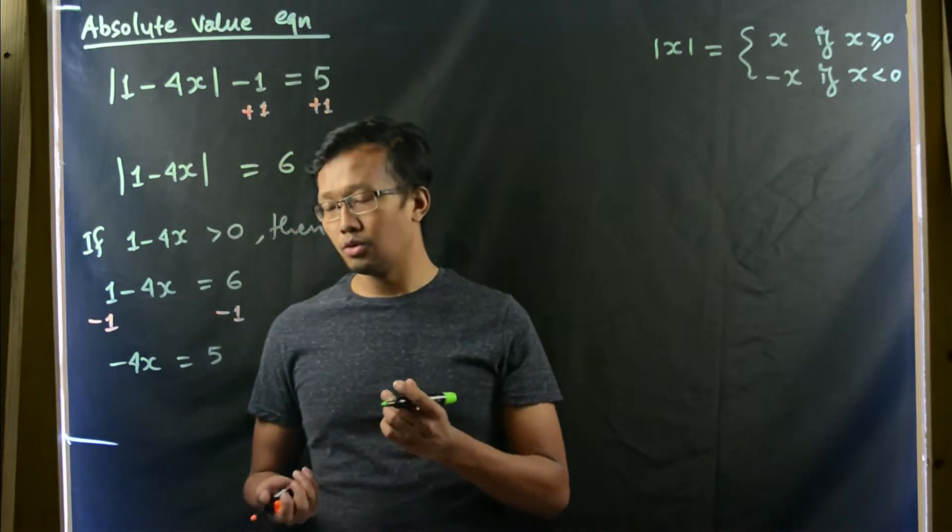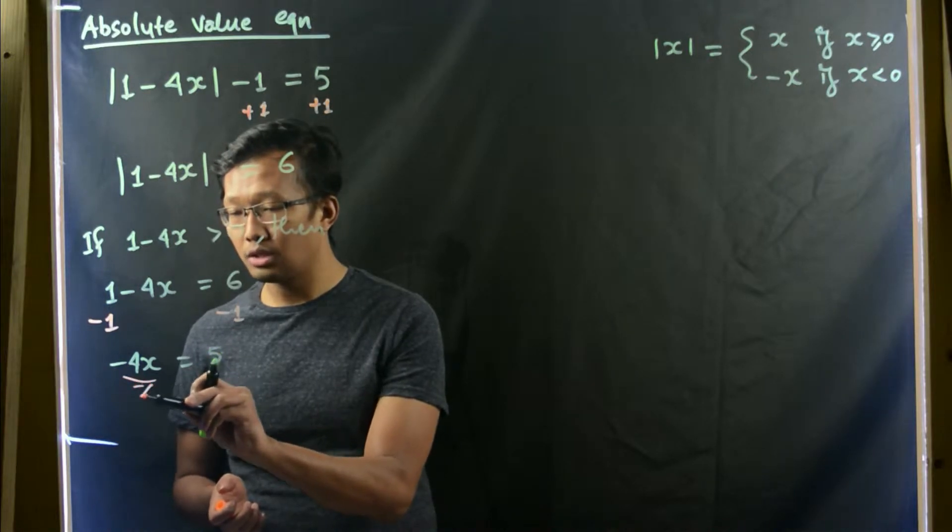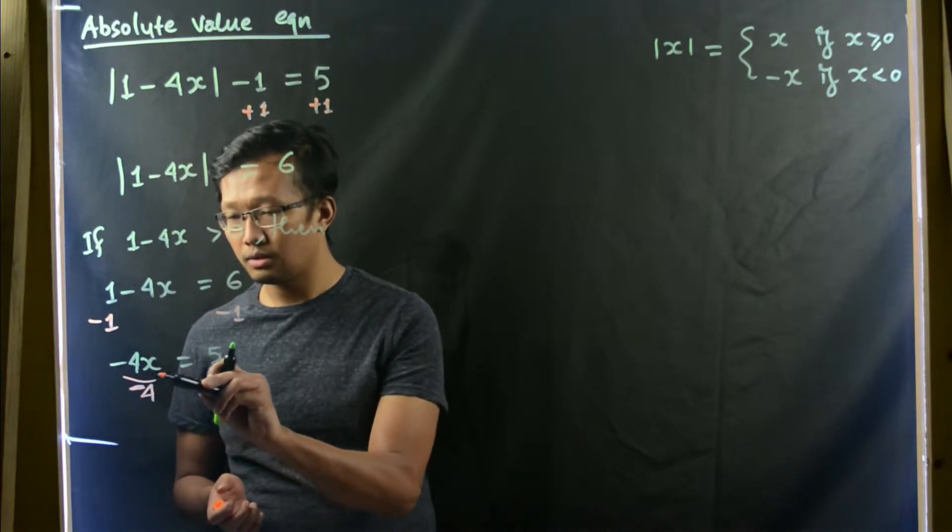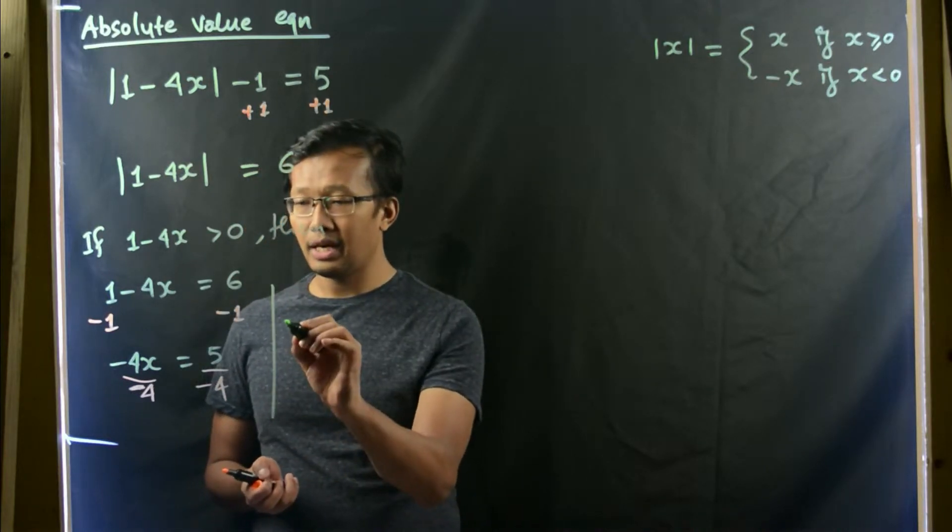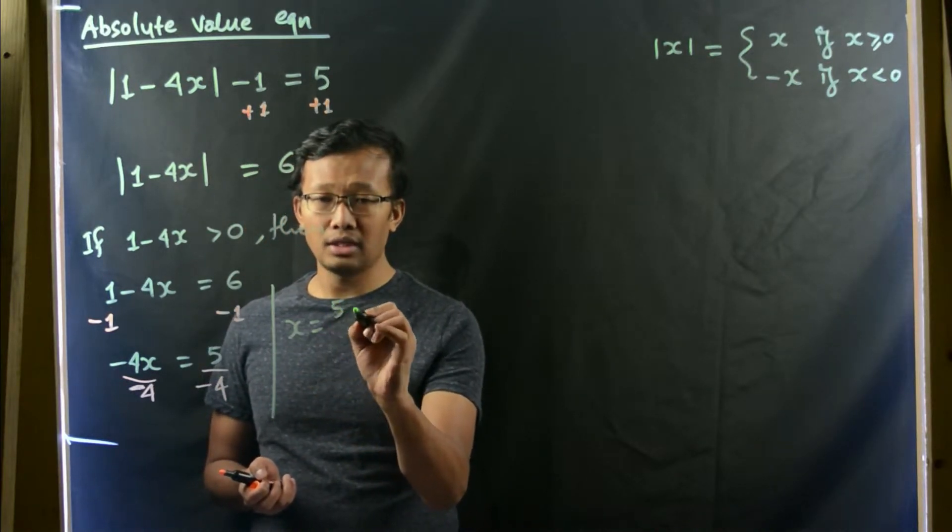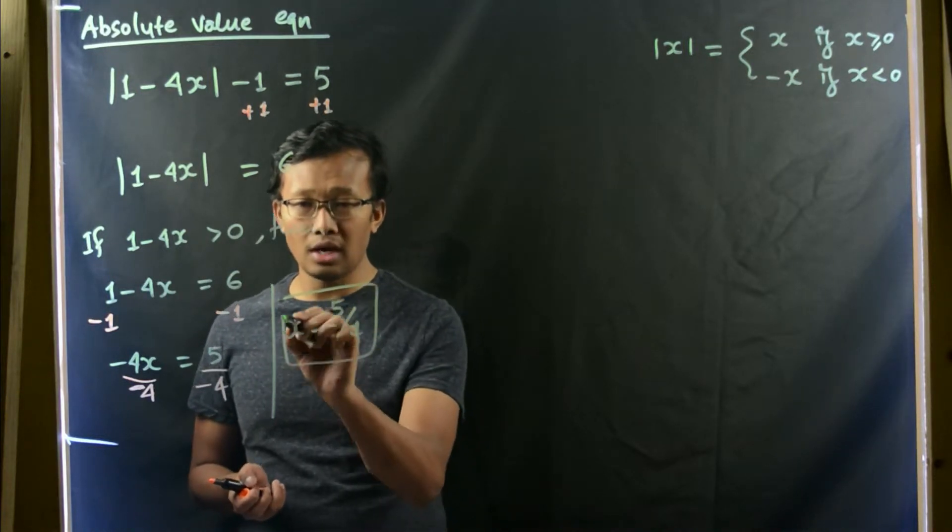Let us divide both sides by negative 4. Thus, we'll be getting x equals to negative 5 over 4. So this is one solution. We have solved this equation for the first definition.